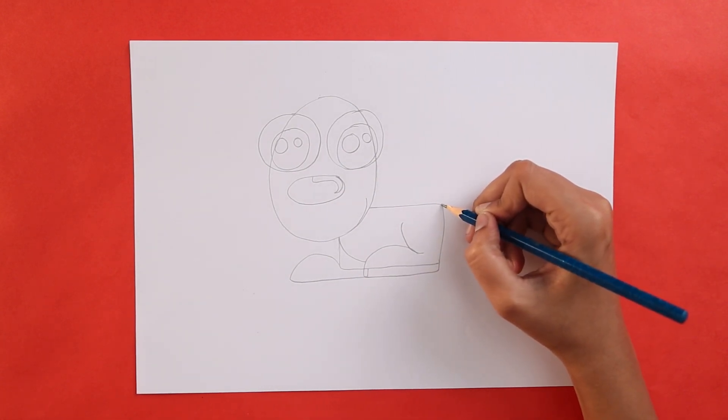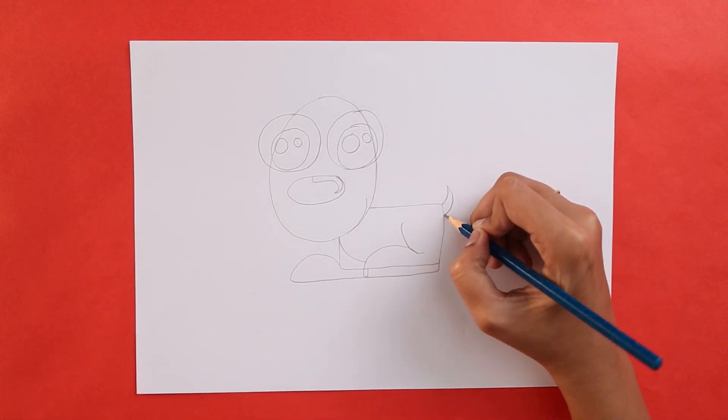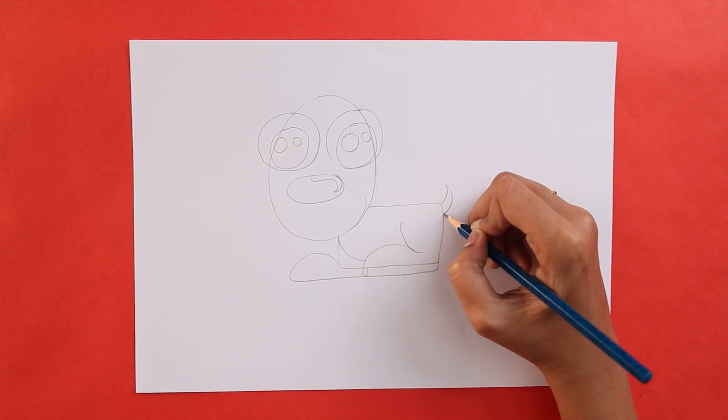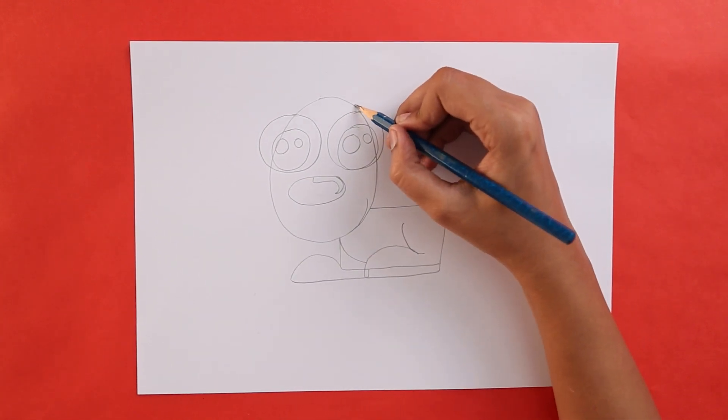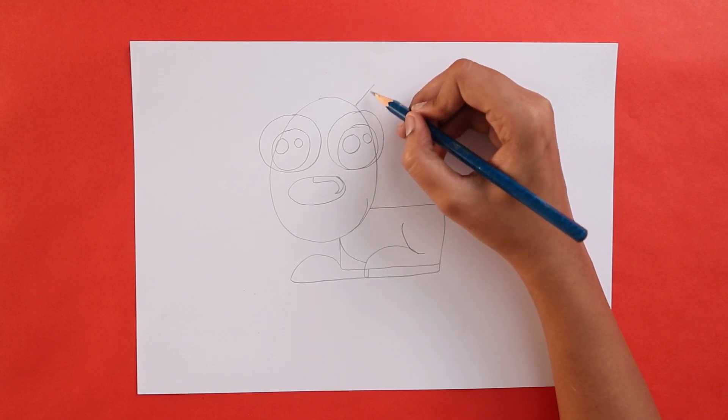And finally, the tail. You can draw a little curve like this. Oops, we almost forgot the ears. We can't have a dog without ears now, can we?